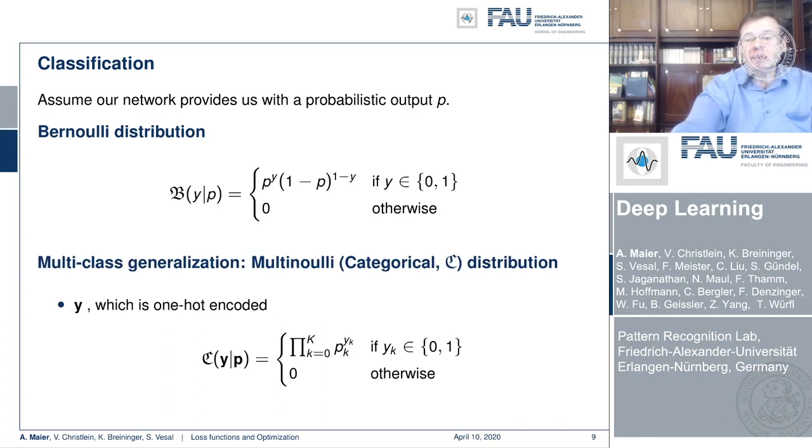The multinoulli or categorical distribution. Here, y is typically modeled again as one-hot encoded, and we can then write down the categorical distribution as the product over all the classes of the probability for each class to the power of the ground truth label, which is here yi as 0 or 1.